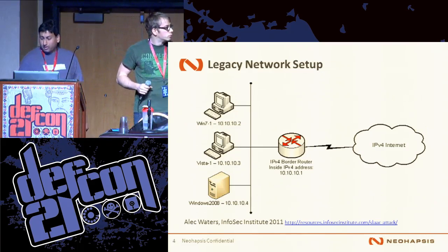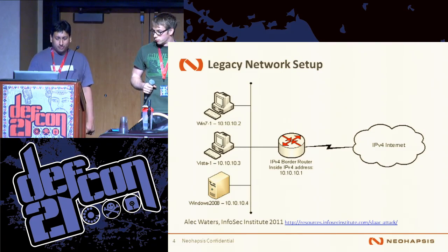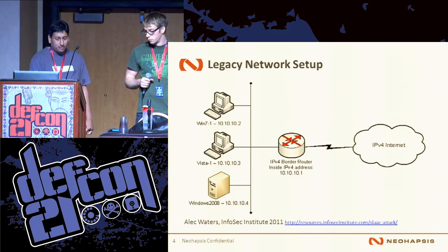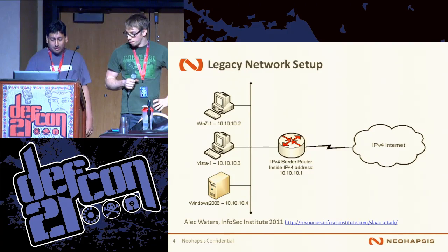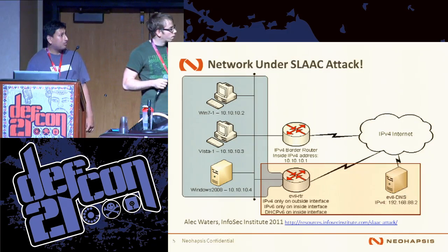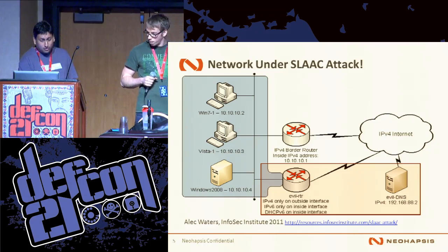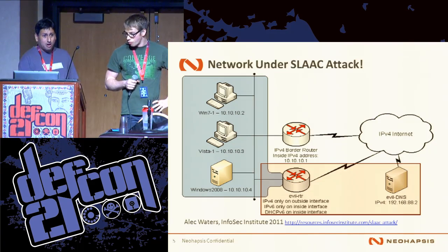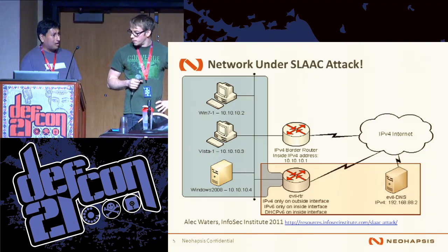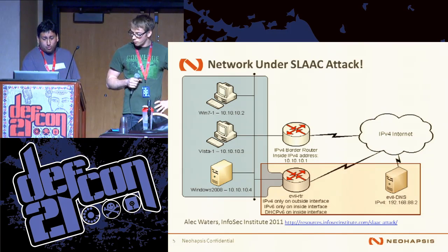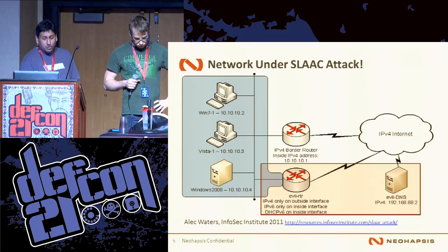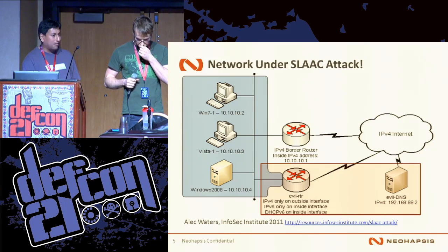Here we have our plain vanilla legacy network — there's only IPv4. There's a router that has DHCP, DNS, and no IPv6 anywhere. We have some hosts: Windows 7, Windows Vista, 2008. What Alec Waters put together was a guide to create an evil router. Although there are two nodes — the evil router and the evil DNS — they're intercepting traffic by running an IPv6 network overlay and then re-sending it out over the IPv4 network.